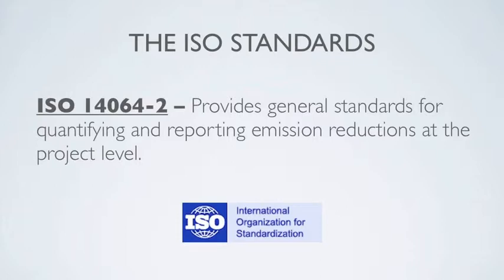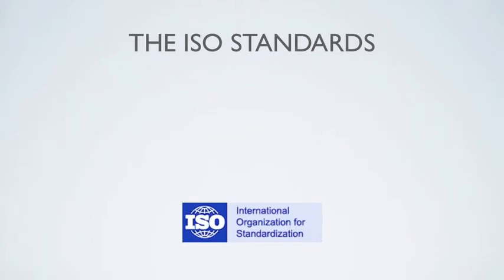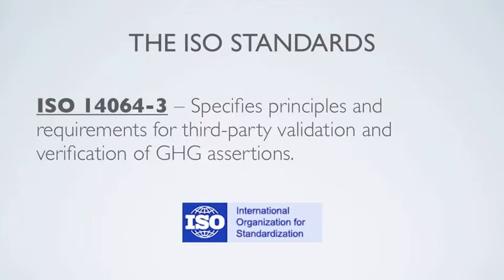This standard is the basis for greenhouse gas reduction projects undertaken to create carbon credits. ISO 14064-3 is the standard for third-party verification of both inventories and reduction projects. It describes the process for evaluating the accuracy and completeness of a company's GHG assertions, and can be used by an organization to check its own reporting or by independent parties for the purposes of third-party verification.